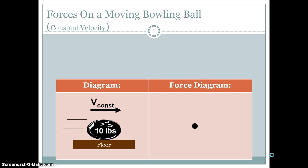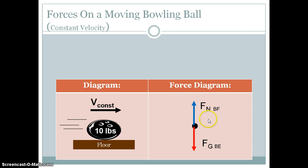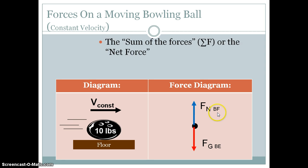Let's look at the bowling ball when it's moving at a constant velocity along the floor. Even though we weren't pushing or pulling on it, we know the bowling ball was feeling a force of gravity because it has mass. We draw a force going down and label it the force of gravity on the bowling ball by the earth. Because it's resting on the floor and the floor is flexing a little bit, the floor pushes back up with a normal force — the force normal on the bowling ball by the floor.